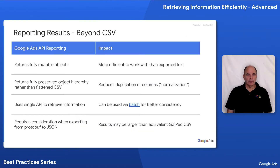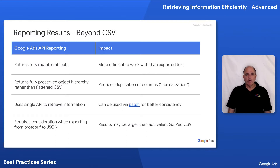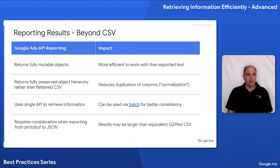For users who are migrating from the legacy AdWords API, one of the frequent questions we get is about CSV export capability. The legacy AdWords API provided report downloads in several CSV flavors, but the new Google Ads API does not provide any means of exporting to CSV.